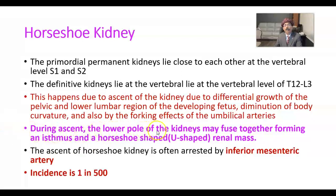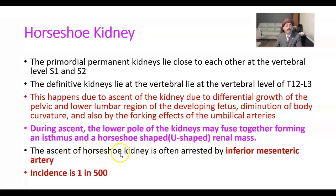During ascent, the lower poles of the kidneys may fuse together, forming an isthmus and a horseshoe-shaped or U-shaped renal mass. The ascent of the horseshoe kidney is often arrested by the inferior mesenteric artery.